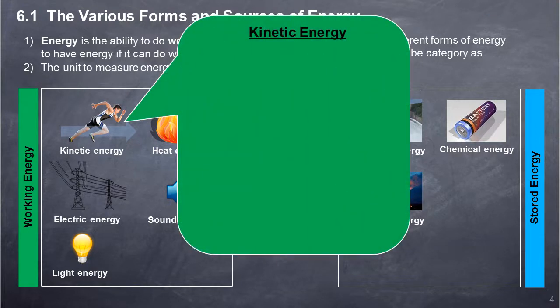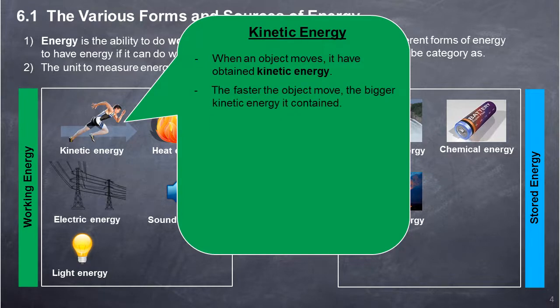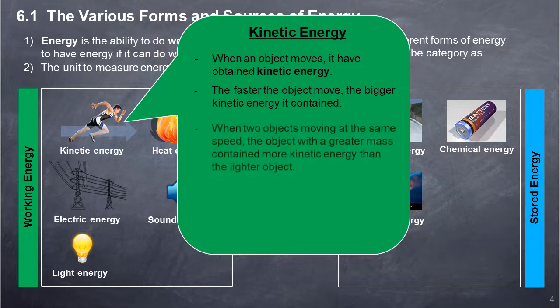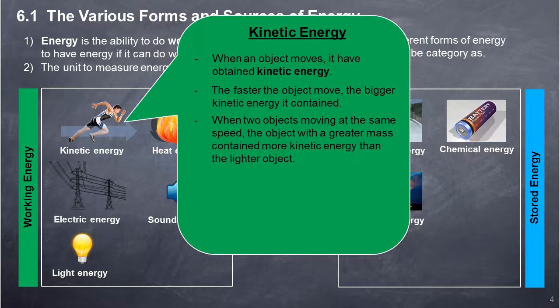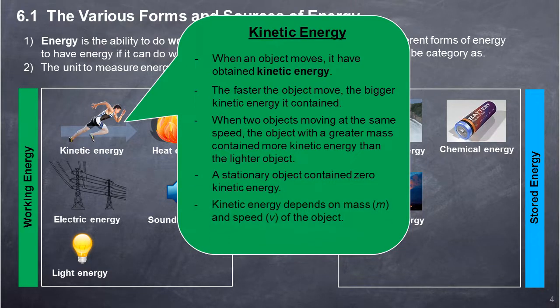Kinetic Energy: When an object moves, it has obtained kinetic energy. When two objects move at the same speed, the object with greater mass contains more kinetic energy than the lighter object. A stationary object contains zero kinetic energy. Kinetic energy depends on mass (m) and speed (v) of the object. Kinetic energy equals half times m times v squared.